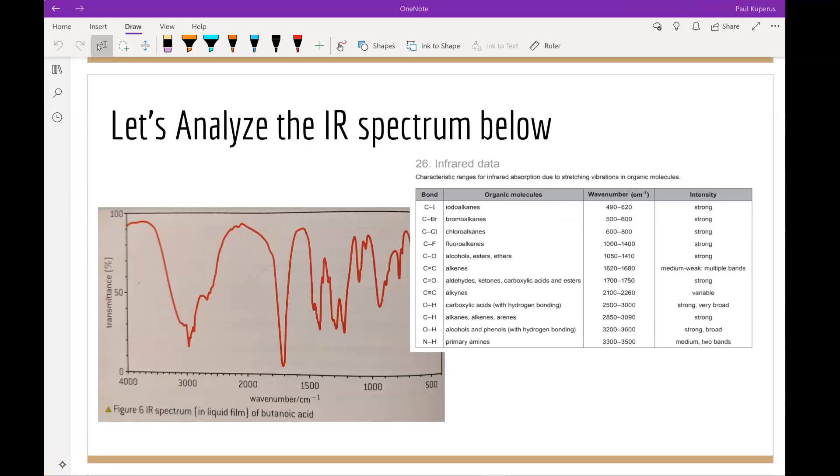So here we have the data from table 26 in your IB data booklet, and here we have a typical IR spectra. This is for butanoic acid. Now the first thing we have to note is that from 300 to approximately 1400 over here, we have the fingerprint section. This section is not really too useful to us.